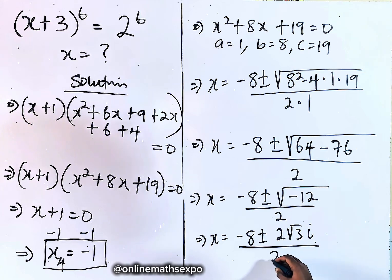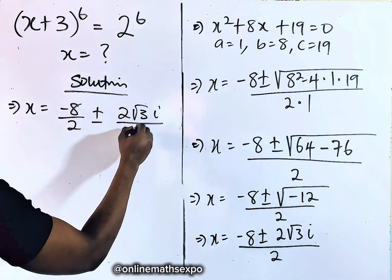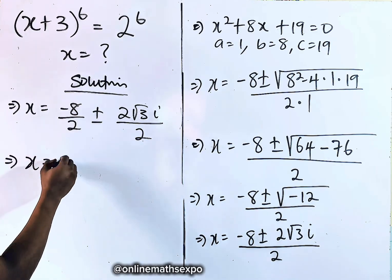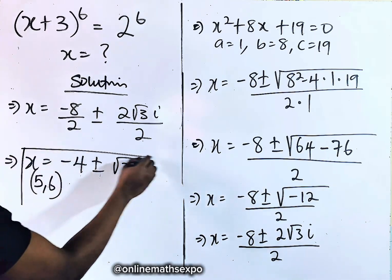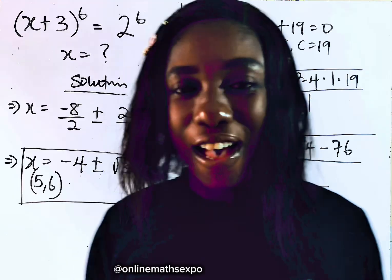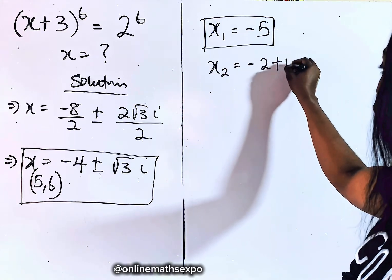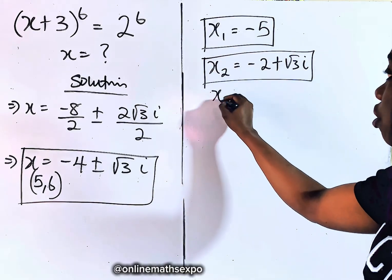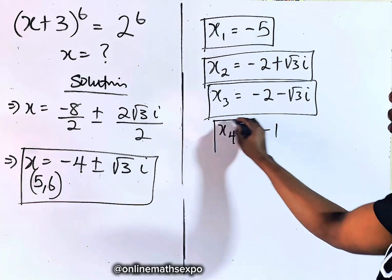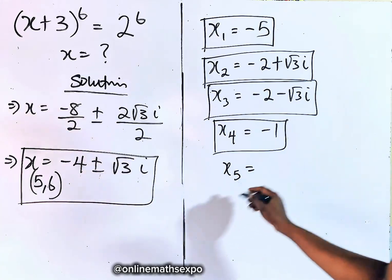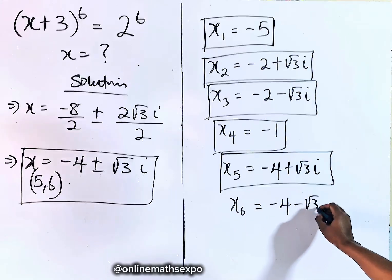So we have x = (−8 ± 2√3·i) / 2. Dividing each term by 2: x = −4 ± √3·i. These are the fifth and sixth values of x. Bringing all values together: x₁ = −5, x₂ = −2 + √3·i, x₃ = −2 − √3·i, x₄ = −1, x₅ = −4 + √3·i, x₆ = −4 − √3·i.